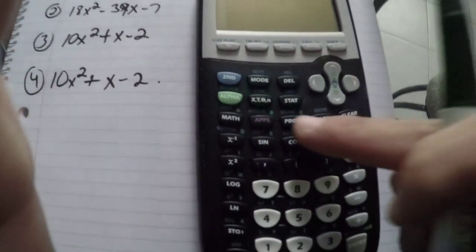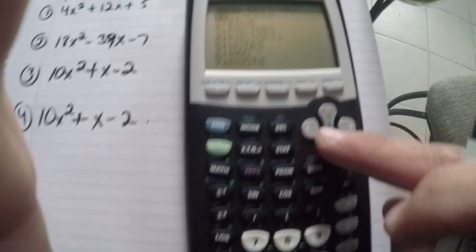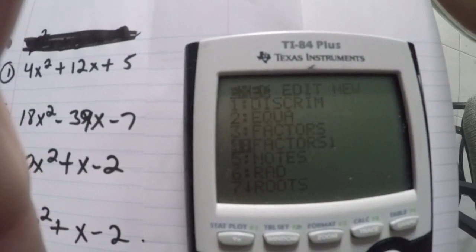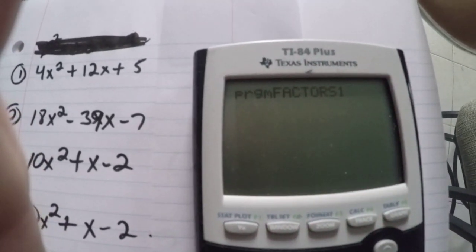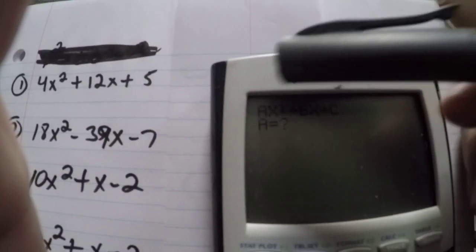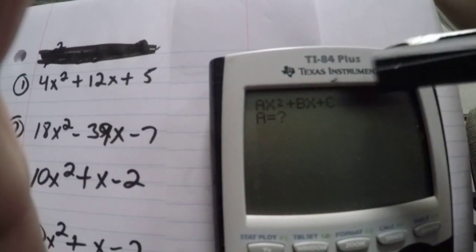So now on my calculator I will click programs because I have it saved there. And I will go down to factor one and I will hit enter again. So now it will come up with the whole formula.